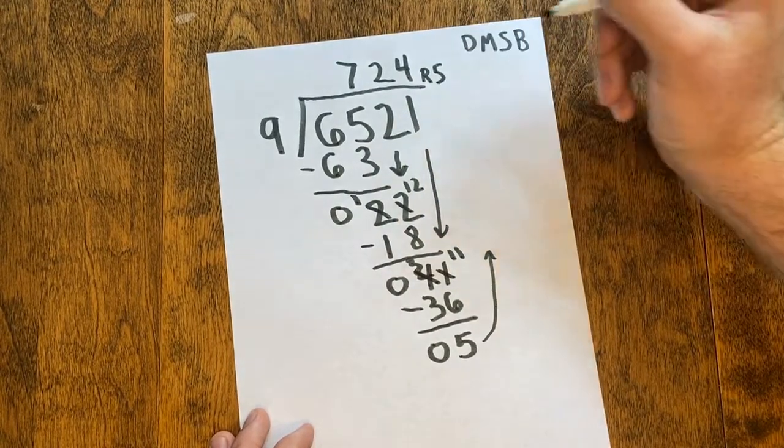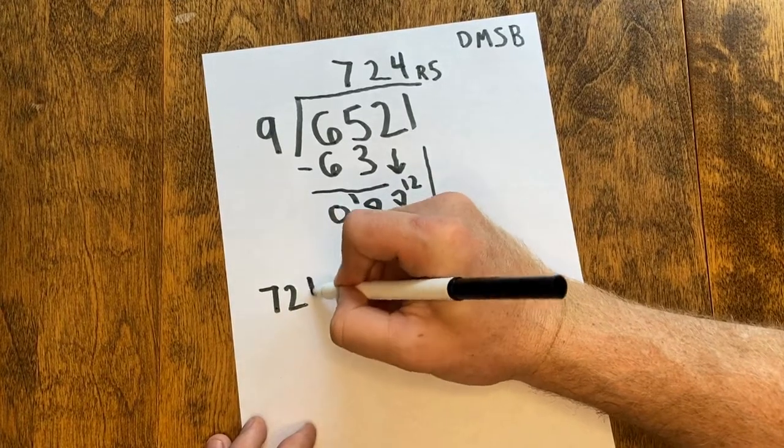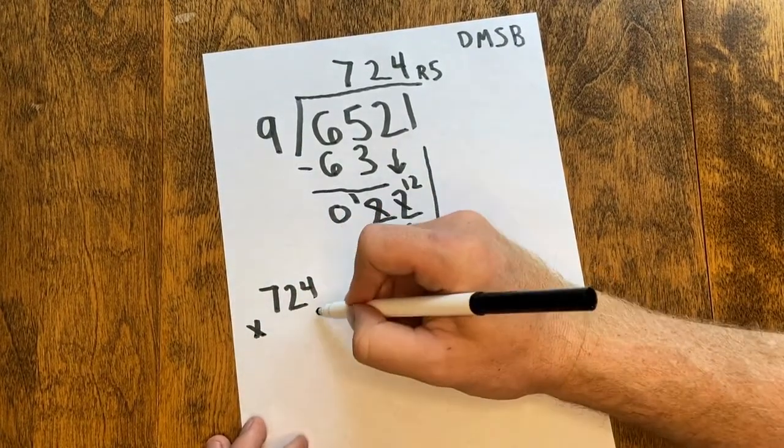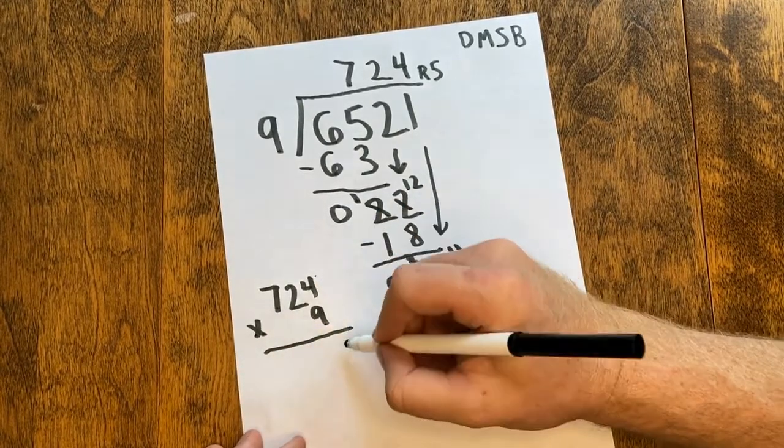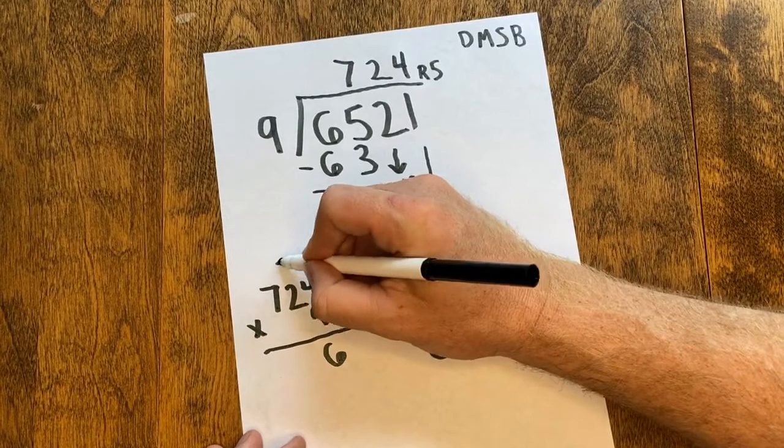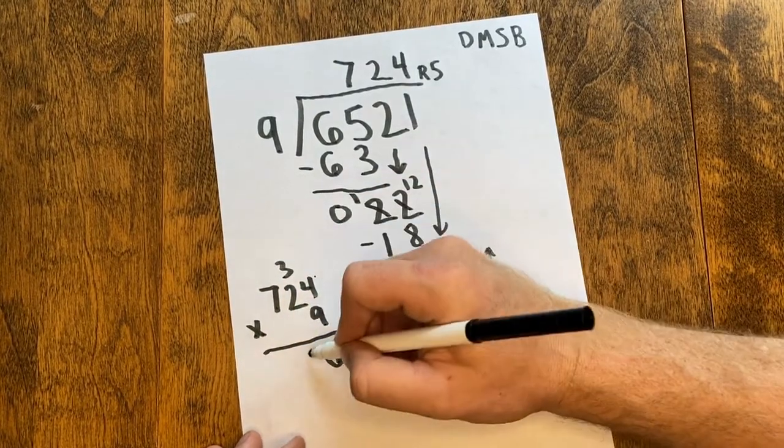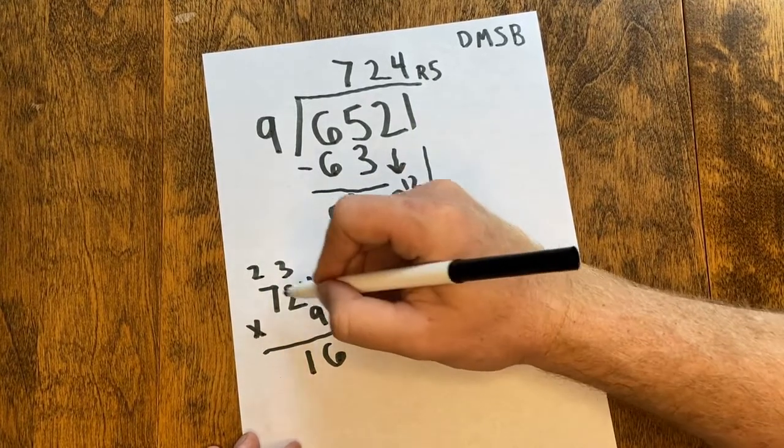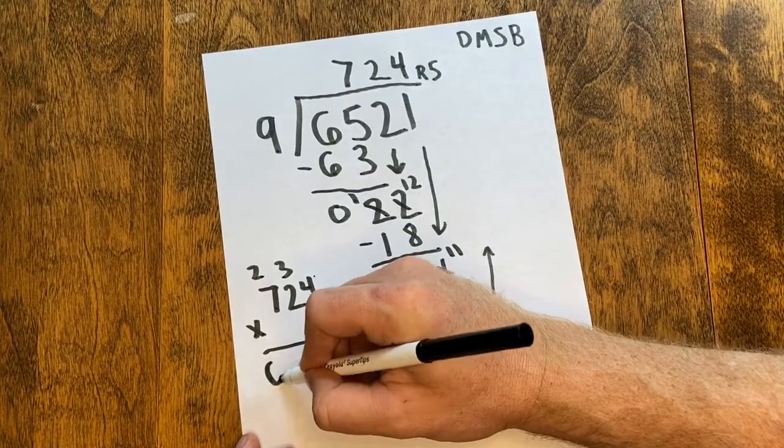I'm going to check my quotient by using multiplication. 724 times 9, and here we go. 9 times 4 is 36. I'm going to drop the 6, carry the 3. 9 times 2 is 18, plus 3 more is 21. Drop my 1, carry my 2. And 9 times 7 is 63, plus 2 more is 65.